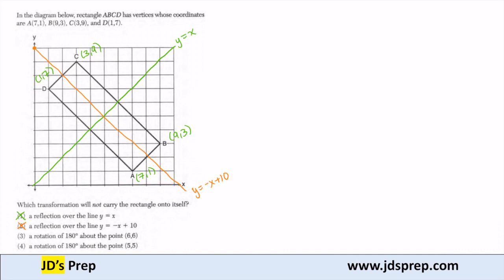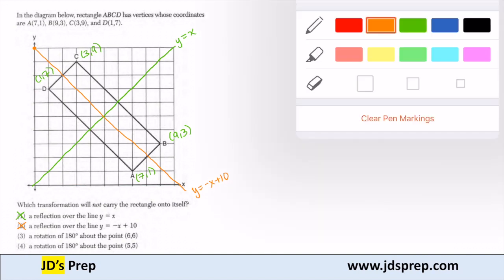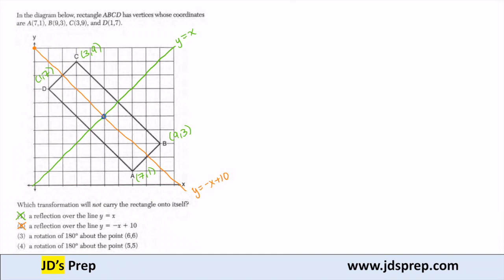The other point that is not going to affect my rectangle is 4, a rotation about the point (5,5). Because (5,5) is this point here. That's essentially the center. If I rotate my rectangle 180 degrees around that point (5,5), I'm going to get the same exact rectangle. So it can't be 4.